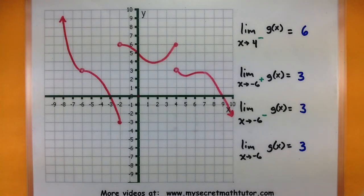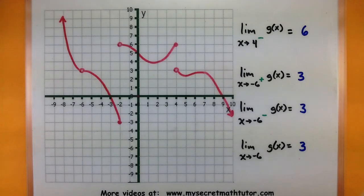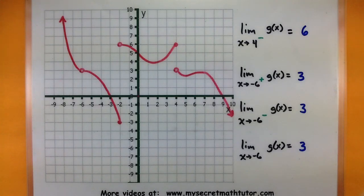So one-sided limits are actually not so bad when you look at the graph — just remember that you're only coming in from one side or the other. If you'd like to see more videos, please visit MySecretMathTutor.com.